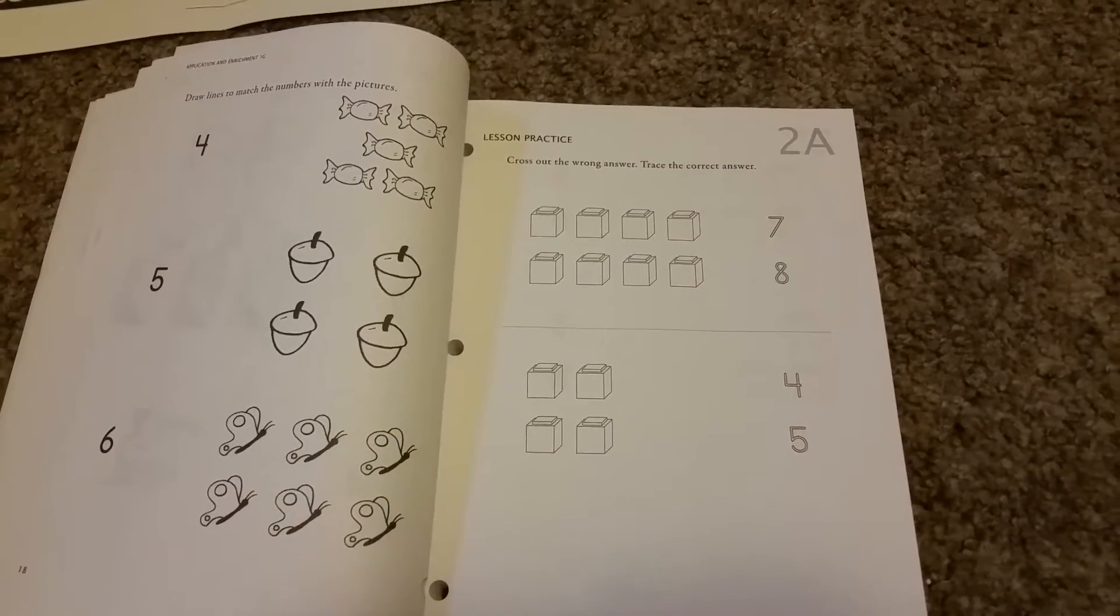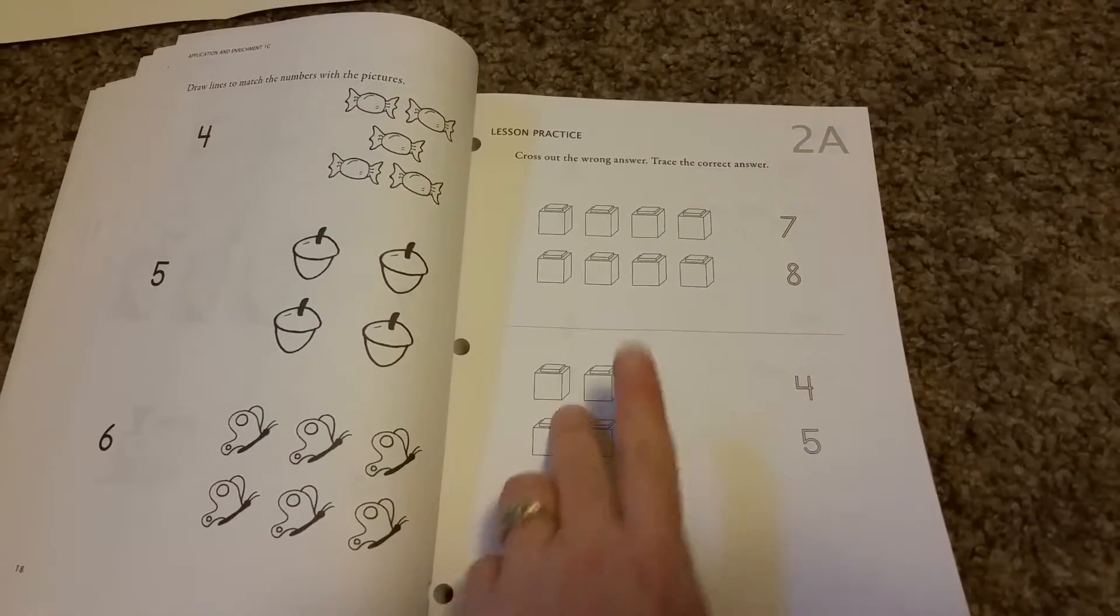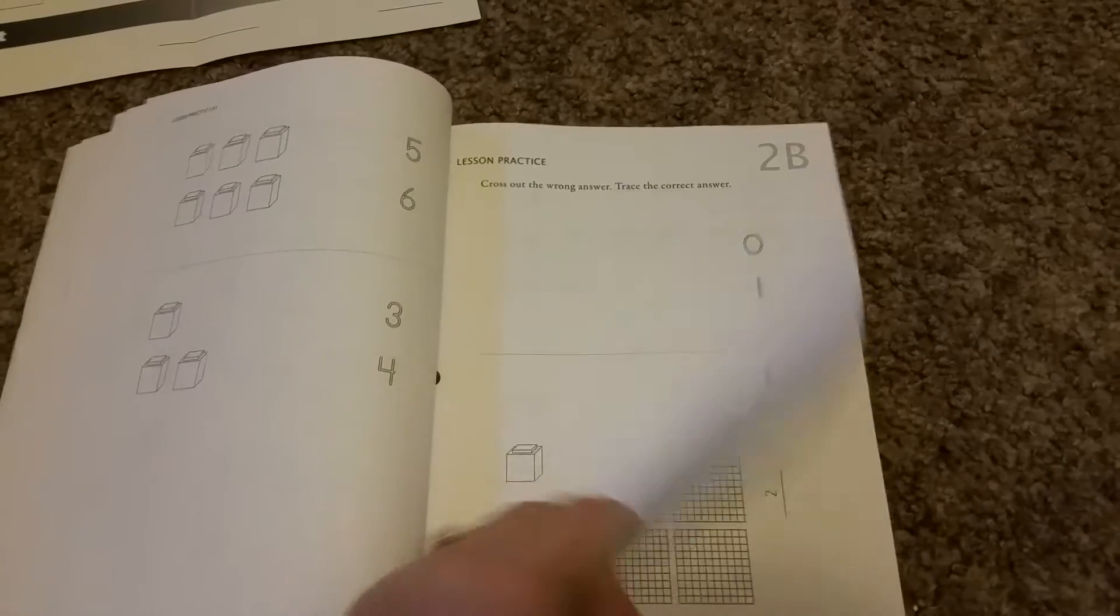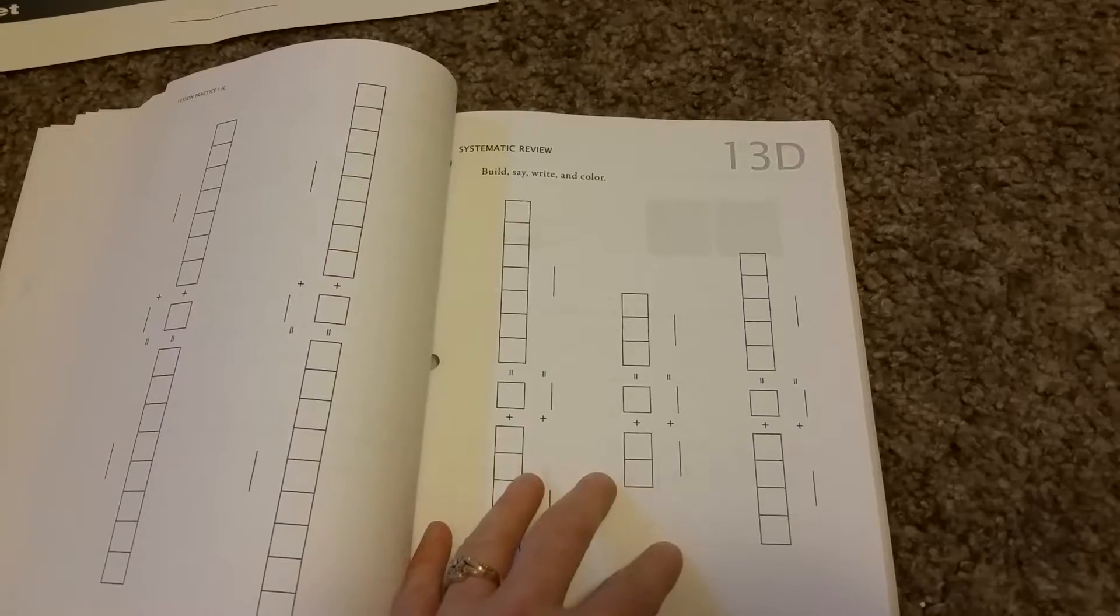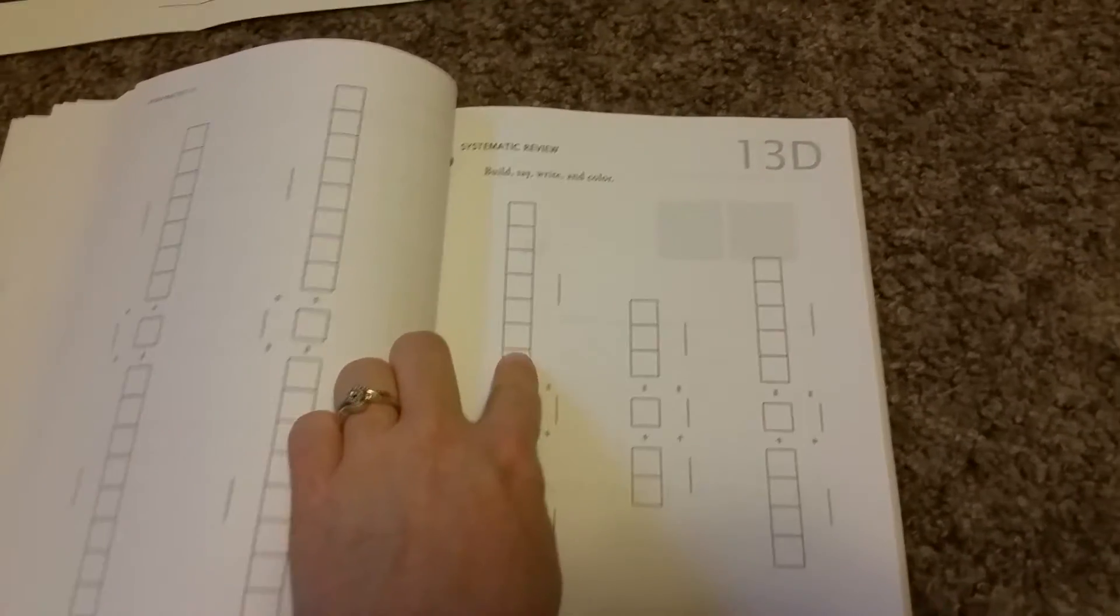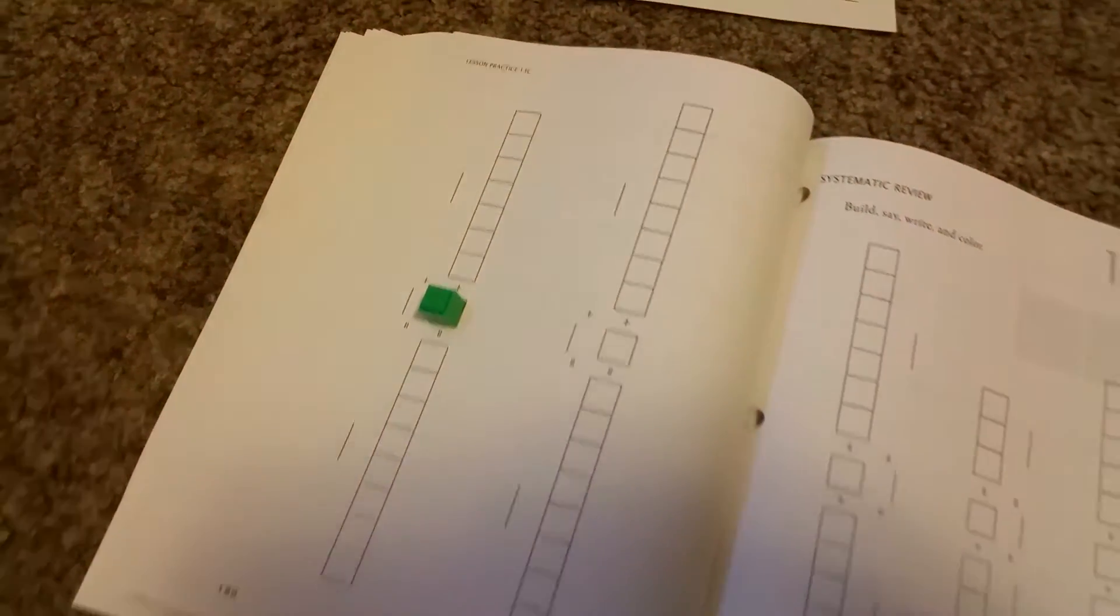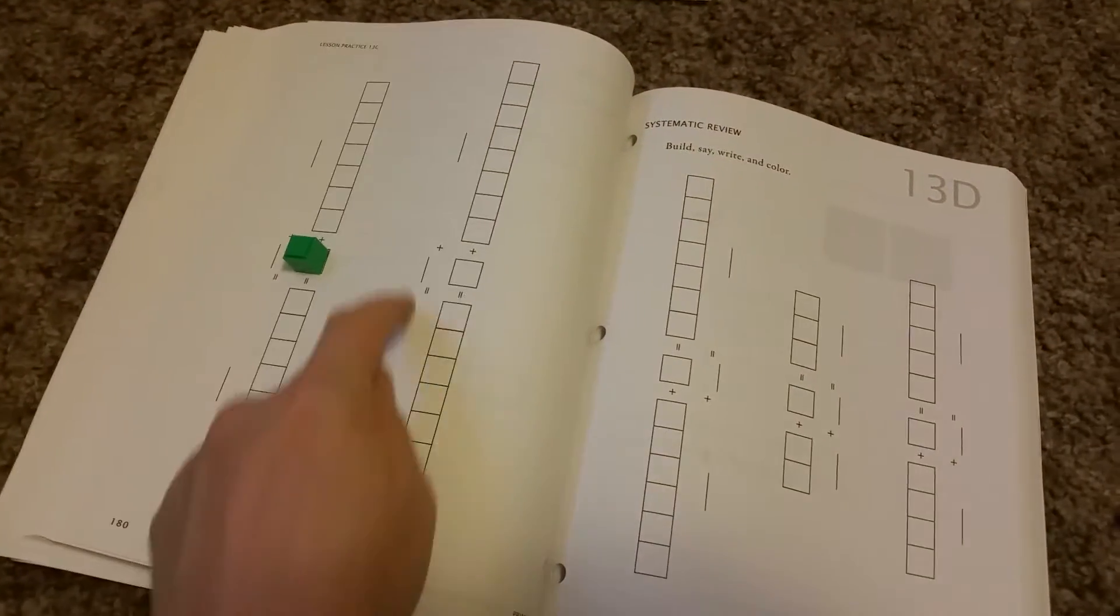And what it does is just introduce counting, numbers and the blocks. So it's fun because when they get up, they learn the place value. And then they learn the colors. And they have places where you actually put the blocks on the worksheet. And so it's fun because they fit. Like this. They fit right on there. So the kids have fun building and then writing the numbers.